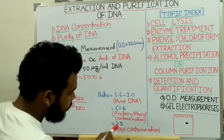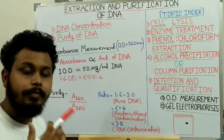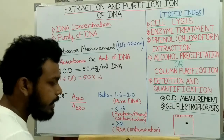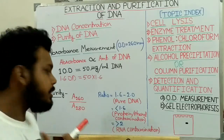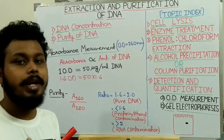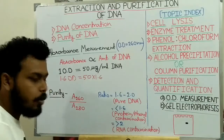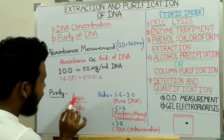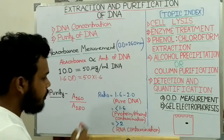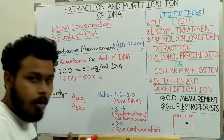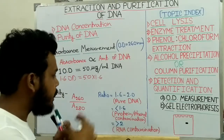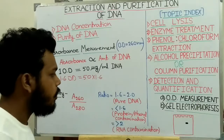When this ratio is greater than 2, then we can say that RNA contamination is present. That is because RNA also shows highest absorbance at 260 nanometer, but RNA absorbs more UV radiation than DNA. So when RNA contamination is present, the absorbance at 260 nanometer is higher, making the overall ratio greater than 2. In this way, we can check the purity of the DNA.